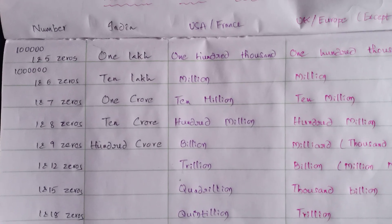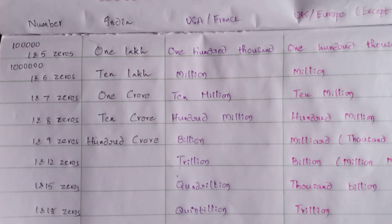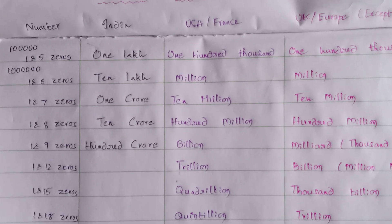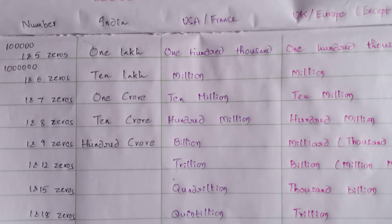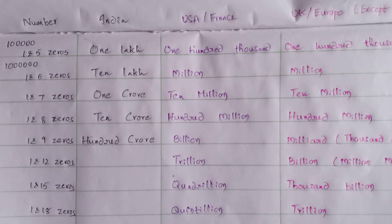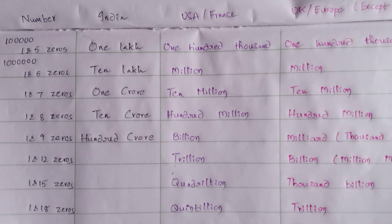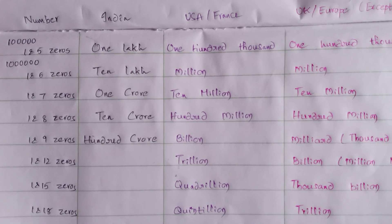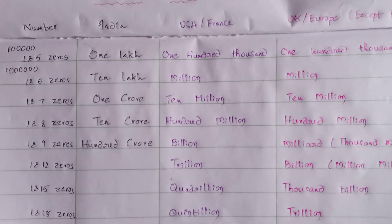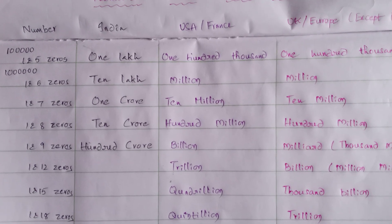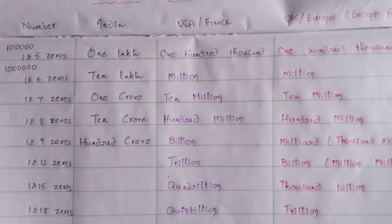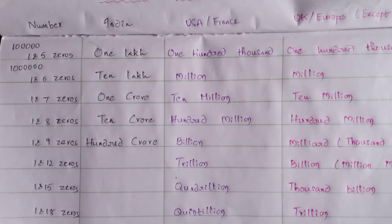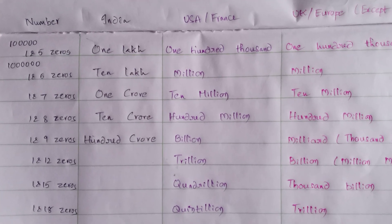1 followed by 7 zeros — in India it is known as 1 crore. In USA and France, 10 million. 1 crore equals 10 million. In UK and Europe, except France, 1 and 7 zeros is known as 10 million.